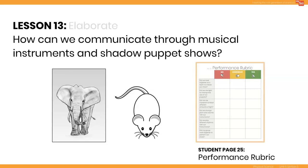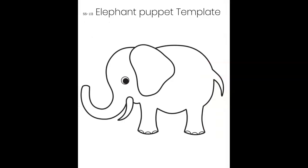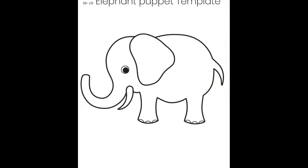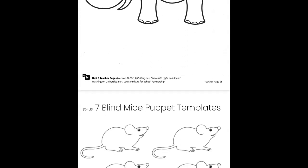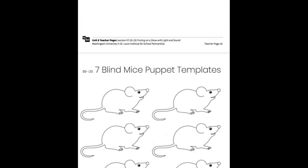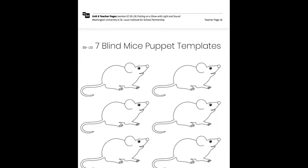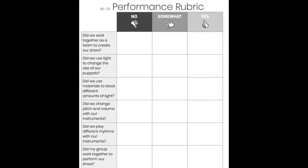Both groups should work together to make sure the performance makes sense. There are student templates in the teacher pages, or students can use the shadow puppets that they made in the previous lessons when putting on their show. Go over the performance rubric with students so they understand the expectations for their project. Give groups time to plan and rehearse their performance before presenting it to the whole class.